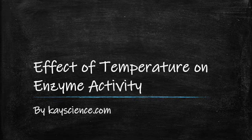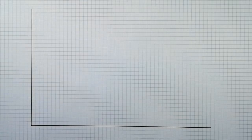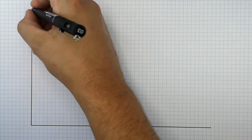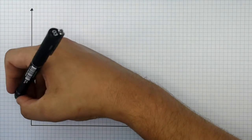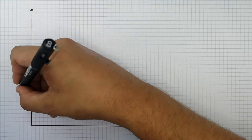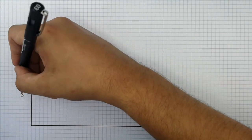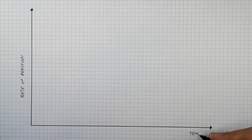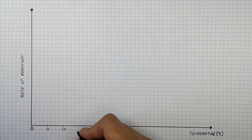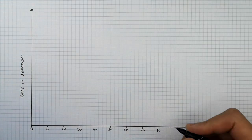The effect of temperature on enzyme activity by kscience.com. This here is a graph. Along the y-axis is the rate of an enzyme-controlled reaction, and along the x-axis is the temperature of the reaction.